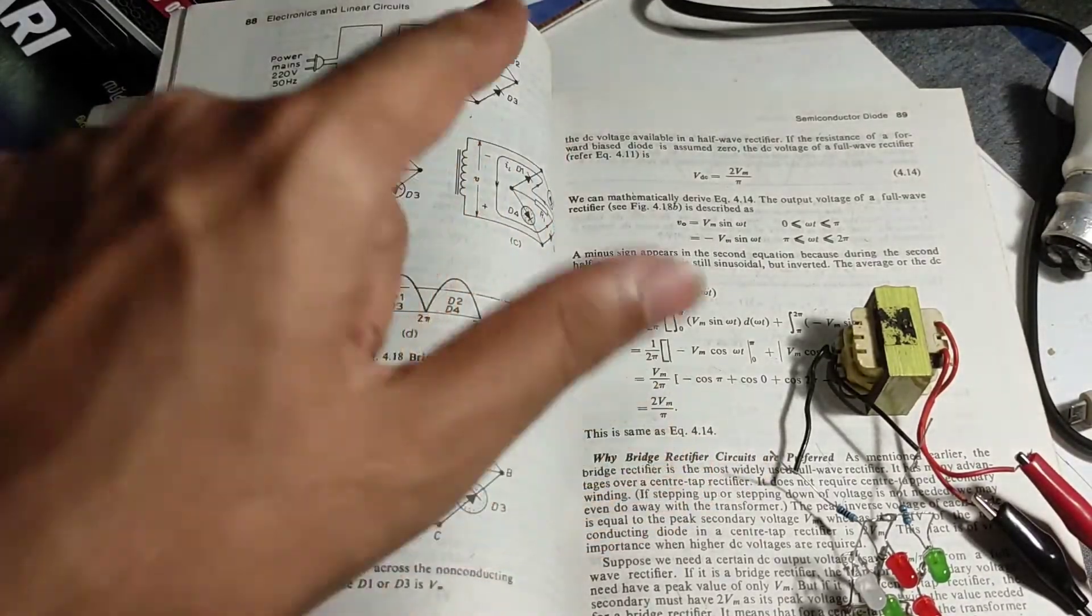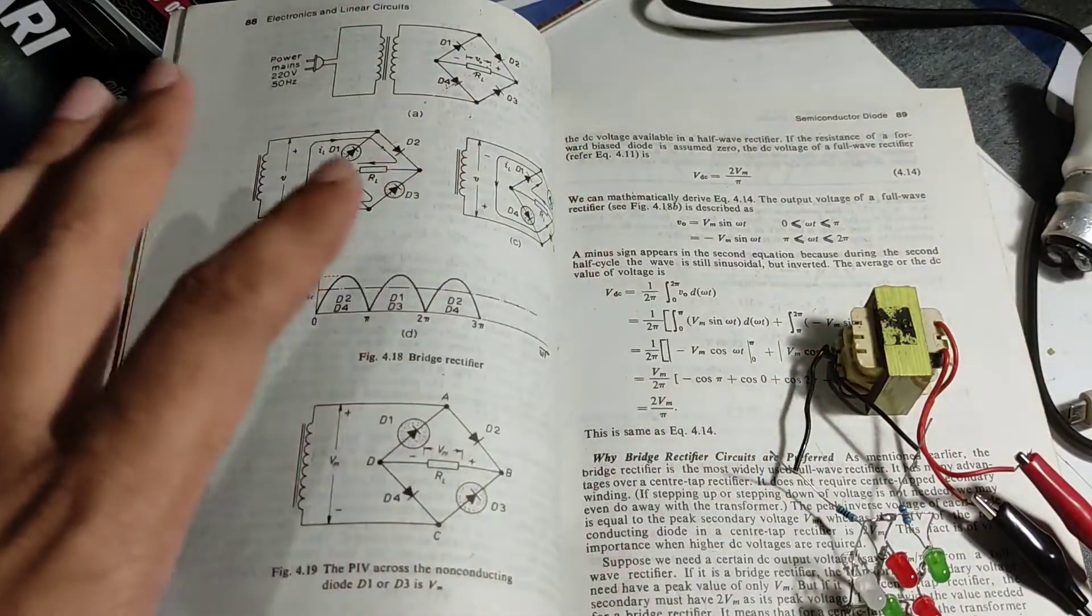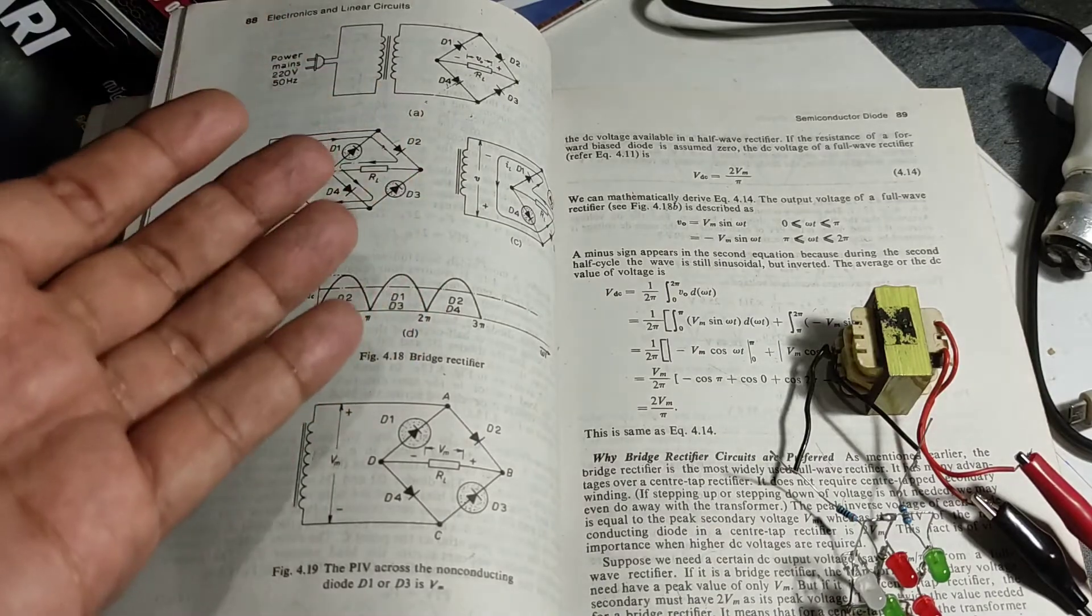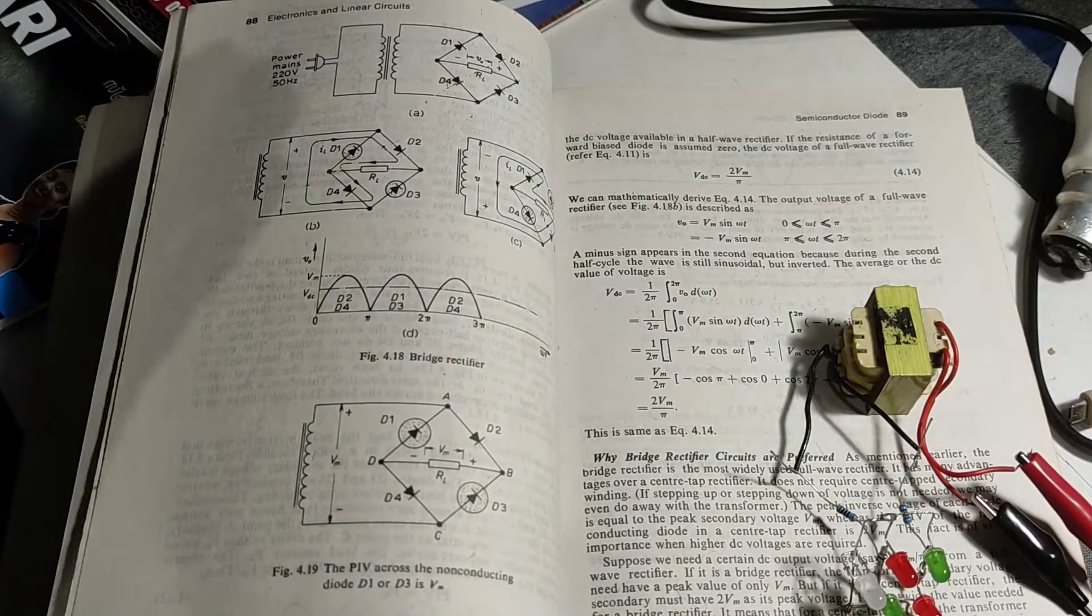As we all know, rectifiers are used to convert AC to DC, and the full bridge rectifier is the most widely accepted, most widely used form of it. It converts the alternating AC to direct current.